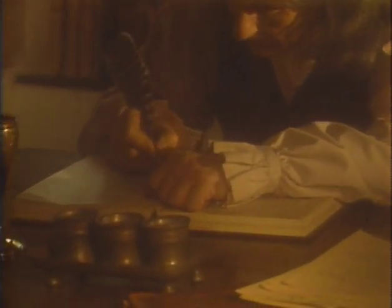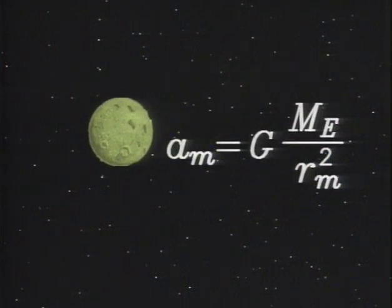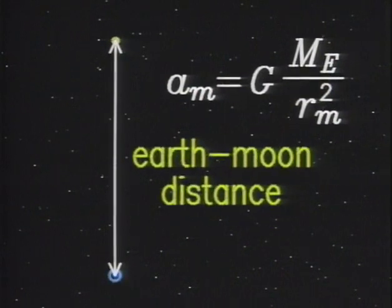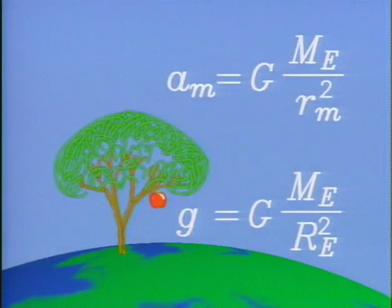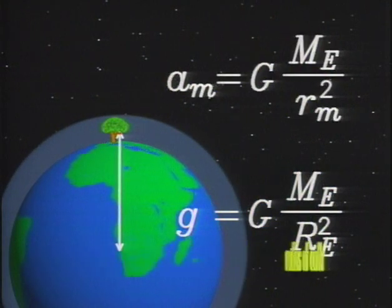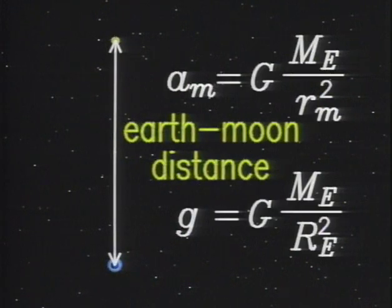Isaac Newton knew that the moon, just like the cannonball, keeps falling — falling through eternity, never reaching the Earth. The moon falls toward the Earth with an acceleration of G times the mass of the Earth, divided by the square of the distance to the center of the Earth. The formula is the same as the one for the apple, or any other body on Earth — except that now, the distance isn't the radius of the Earth. In this case, it's the much larger distance from the Earth to the moon.